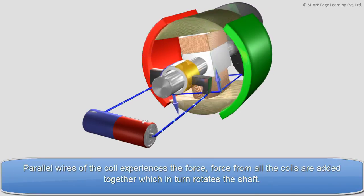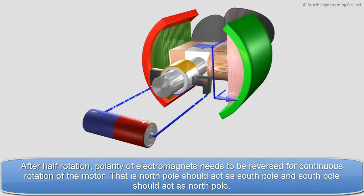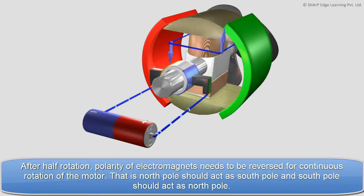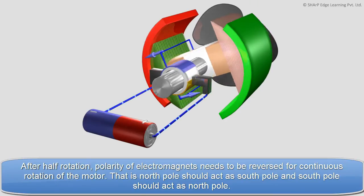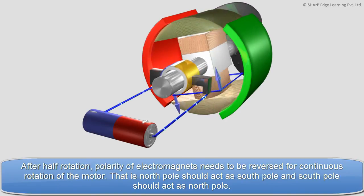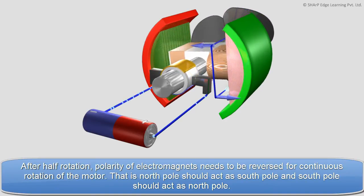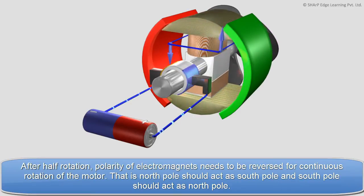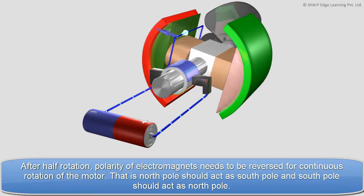After half rotation, polarity of electromagnets needs to be reversed for continuous rotation of the motor. That is, north pole should act as south pole and south pole should act as north pole.